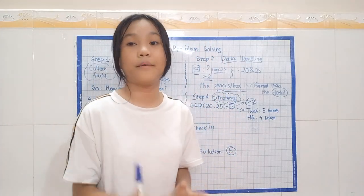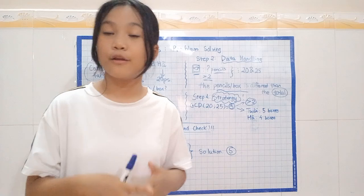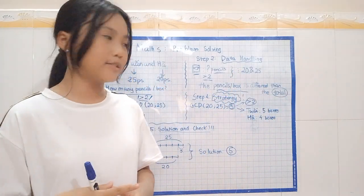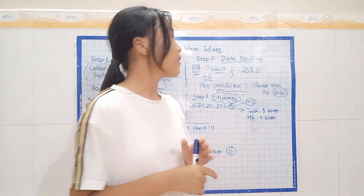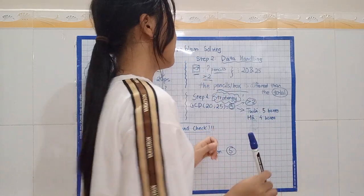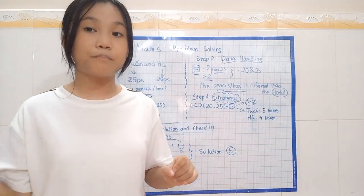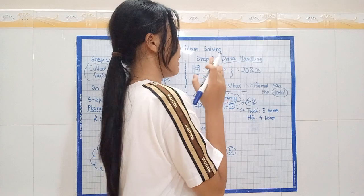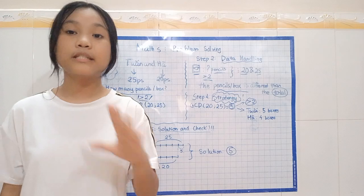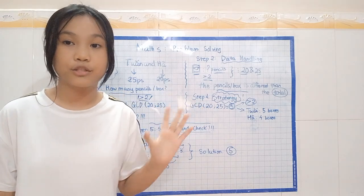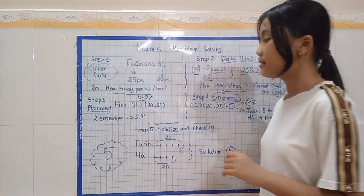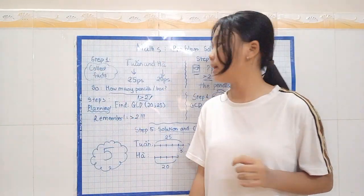We must know that the pencils per box is different than the total amount of pencils bought by each friend. Also, one other important thing is that we know that the amount of pencils per box is able to be divided evenly by 20 and 25, which is another point that we need to make sure that we understand. Come to step 3. Step 3 is plan.